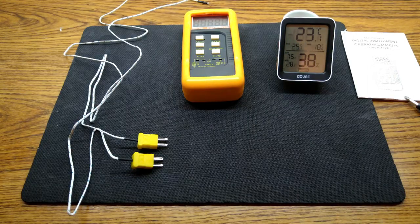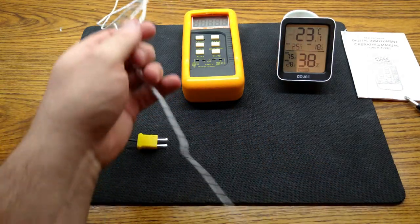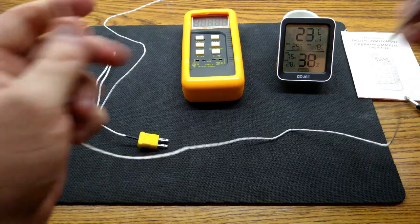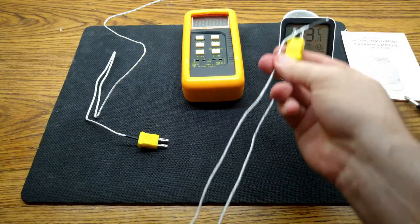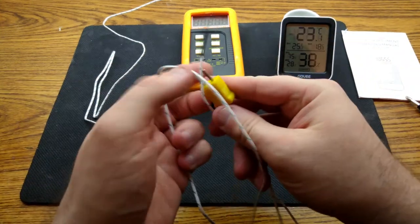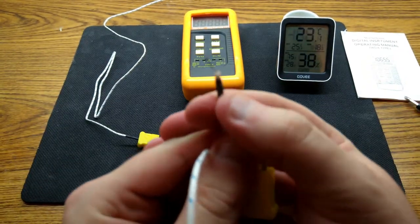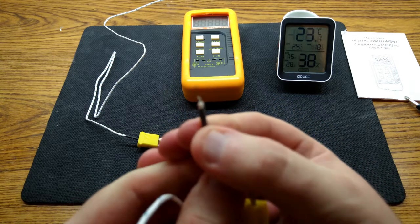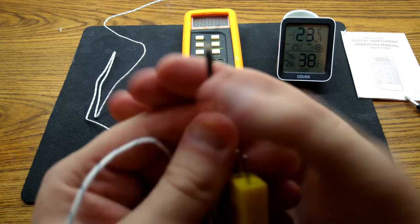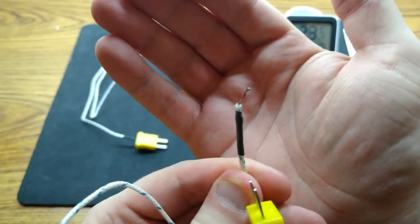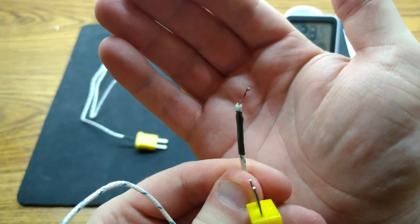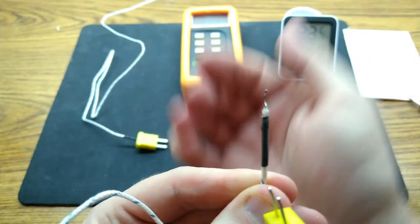The supplied probes are 95 centimeters long, which is quite nice, and they have what is known as an exposed tip. So if I try and get a focus on the tip, you can see the two dissimilar metals welded together at the end and exposed.